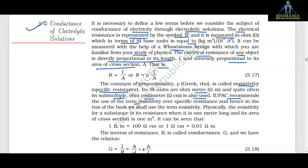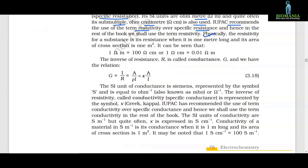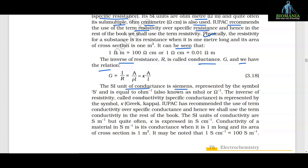IUPAC recommends the use of the term resistivity over specific resistance. Physically, the resistivity of a substance is its resistance when it is 1 meter long and its area of cross section is 1 m². It can be seen that 1 ohm·m = 100 ohm·cm or 1 ohm·cm = 0.01 ohm·m. The inverse of resistance R is called conductance G: G = 1/R = A/(ρL) = κA/L. The SI unit of conductance is Siemens (S), equal to ohm⁻¹ (also known as mho).